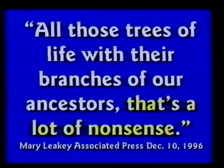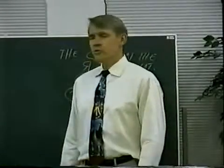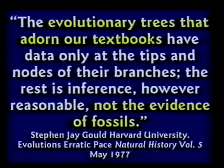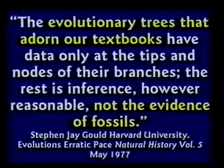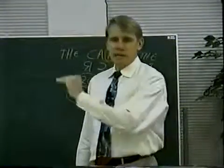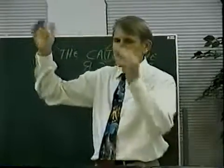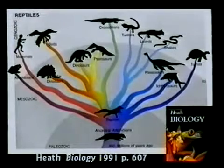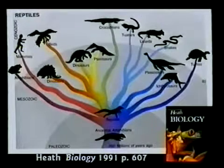Stephen Gould, the Marxist professor at Harvard University, said: 'The evolutionary trees that adorn our textbooks have data only at the tips and nodes of their branches — the rest is inference.' That means they infer, they think it happened. All we see is the tips of the branches; the rest of the tree is imagination. This Heath Biology book appears to be telling kids that humans, birds, and crocodiles have a common ancestor — and everything inside that outer circle is imagination.